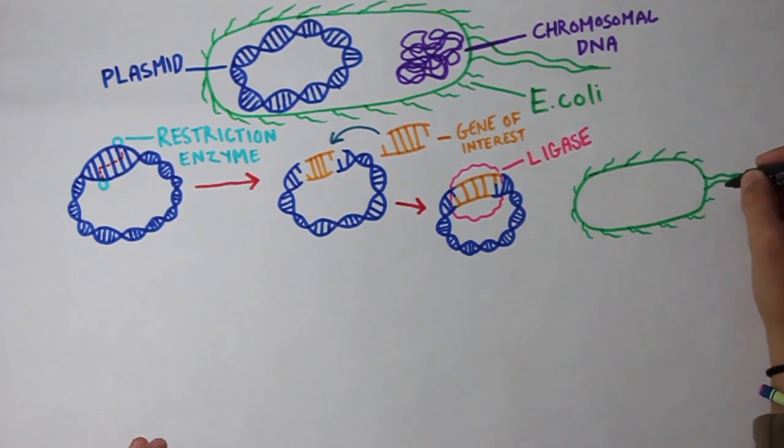From here, you can stick the plasmid into an E. coli cell. As you can see, E. coli has its own chromosomal DNA, which is separate from the plasmid that has been inserted into it.